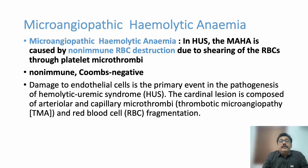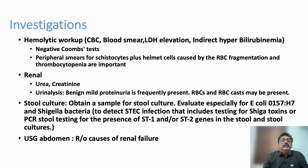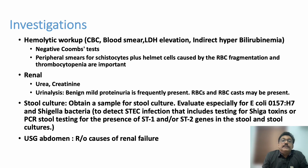The cardinal lesion in HUS pathogenesis is damage to endothelial cells, composed of arteriolar or capillary microthrombi. Injury to vessel walls leads to microthrombi, causing platelet consumption and hemolysis. In peripheral blood smear, schistocytes and helmet cells are seen due to RBC fragmentation. Thrombocytopenia is confirmed, LDH is elevated, indirect hyperbilirubinemia is present, and the Coombs test is negative.